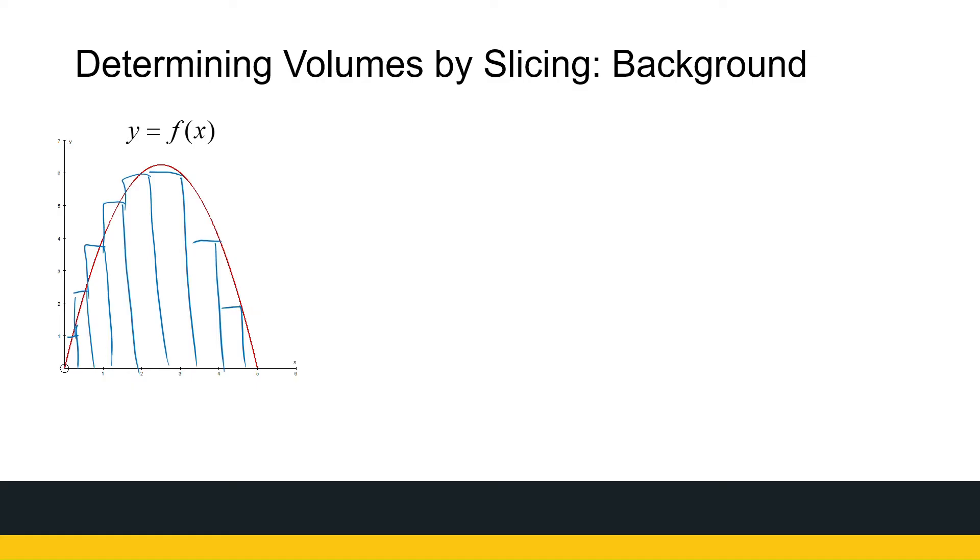So we've said it's the sum, where i goes from 1 to n, of the area of the rectangle. Now, the width of this rectangle is delta xi, the change of x.